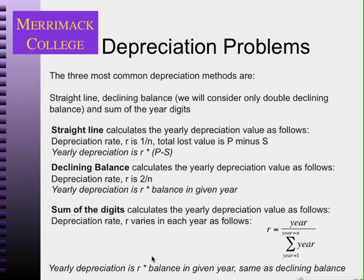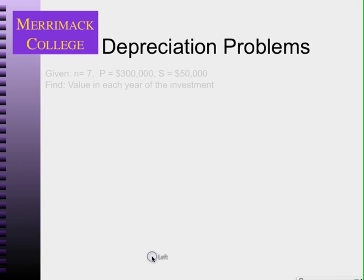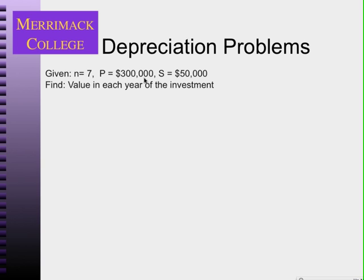We're going to go through each of these methods within the same example using the three different approaches. We have a present worth of $300,000 — that's the initial investment — and the salvage value will be $50,000 after seven years. The question is: what is the value of the investment in each of those seven years?